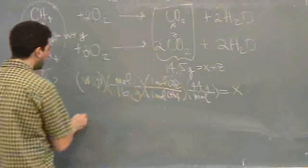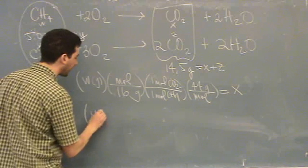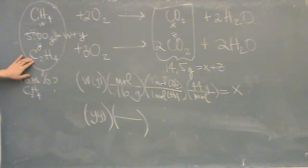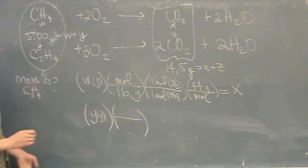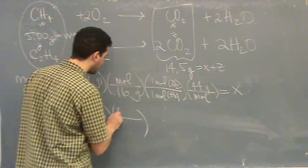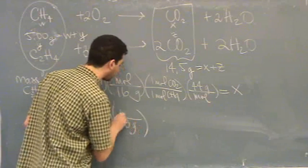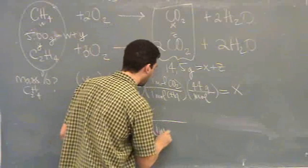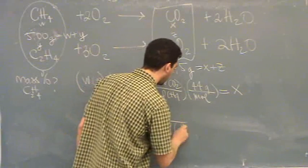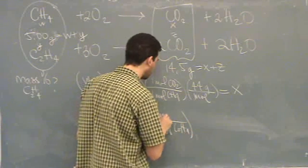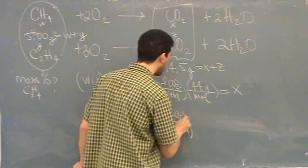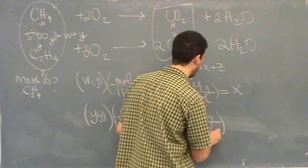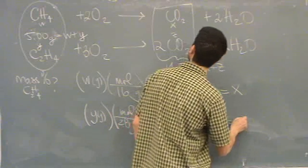Let's do it for the other one, Y, that's in grams. This is going to be 24 plus 4, 28 grams per mole. This one is one mole of ethylene for every two moles, and then CO2 is 44 grams per mole. And that equals Z.